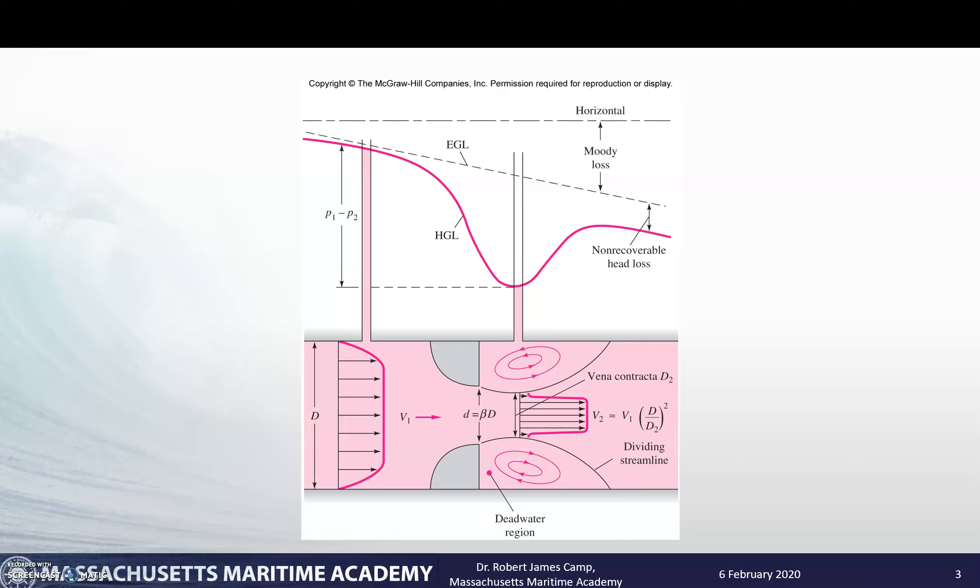So we make a couple of assumptions when we're dealing with this. We're going to assume that Bernoulli's equation is valid because we're going to be using Bernoulli's equation to set this up. Obviously one of these assumptions is inviscid, which means there's no friction. We'll take care of that later with a constant. So we've got steady, inviscid, incompressible flow, and we're also going to assume that it is horizontal so that we don't have to take care of any z component.